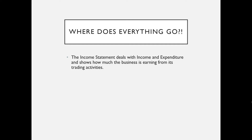In terms of where everything goes, the income statement deals with income and expenditure. Income is amounts of money earned by the business — sales revenue is the biggest example. Anything with 'received' after it is a type of income: rent received, interest received, commission received, discounts received.